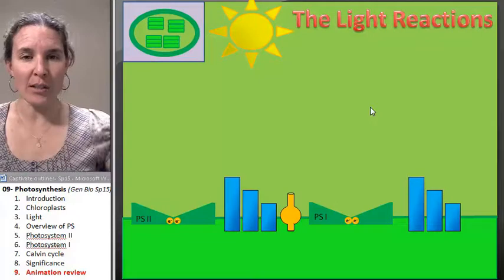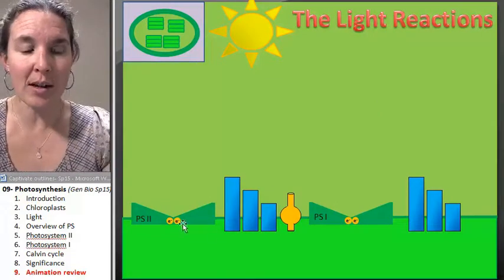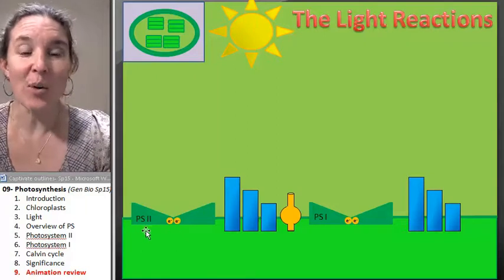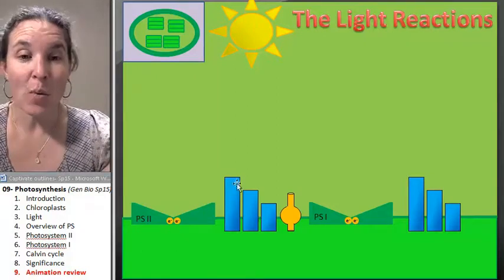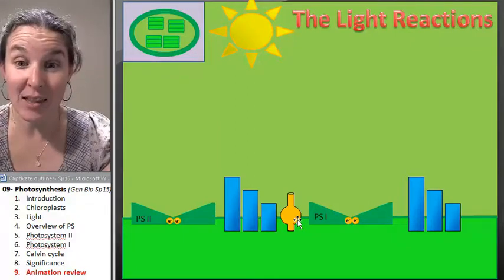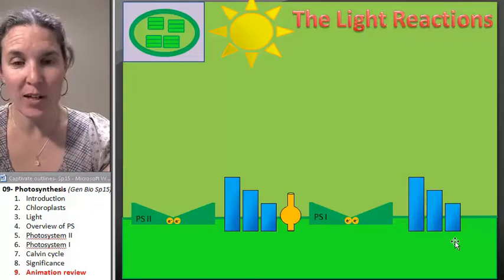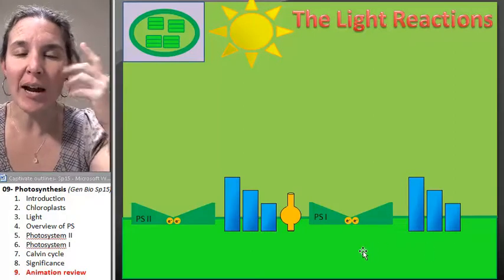And now let's start out doing the light reactions. I've got them all drawn in. We have photosystem two, a little electron transport chain, ATP synthase, photosystem one, and then the same thing, an electron transport chain.